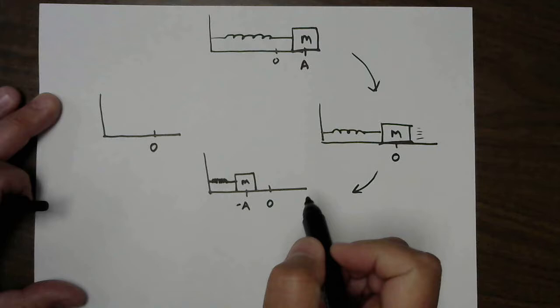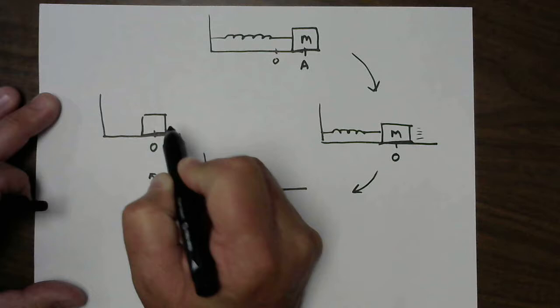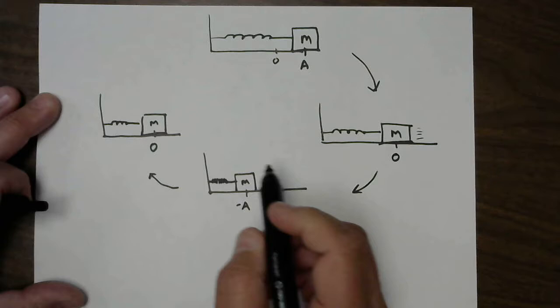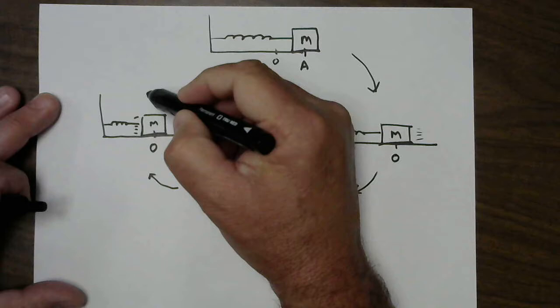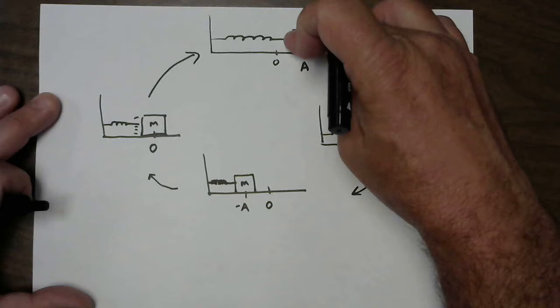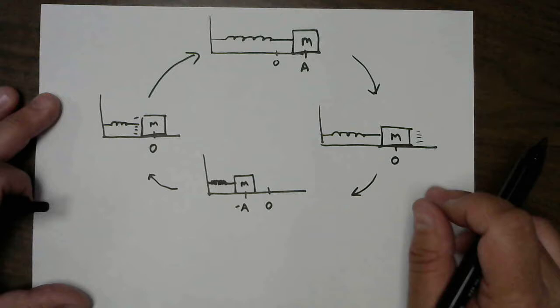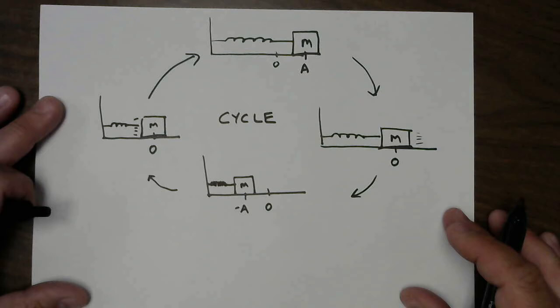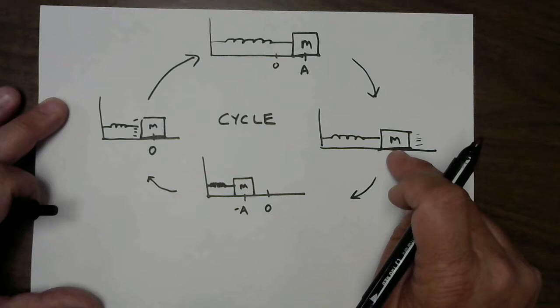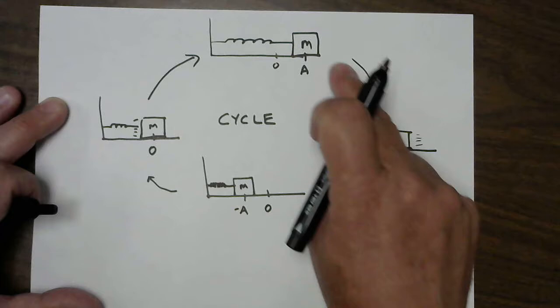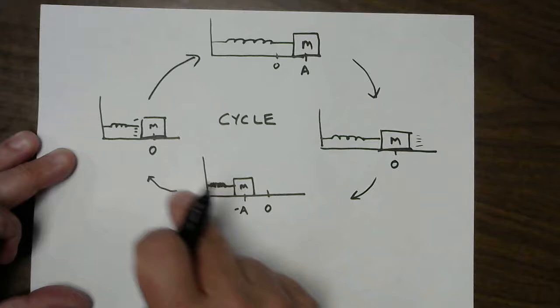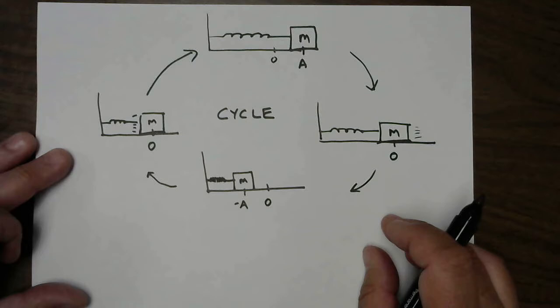A compressed spring will push the other way, so this thing will return to its equilibrium position with the spring in its relaxed normal length. But this mass will be moving and will overshoot, returning us to the initial drawing. So this is truly a cycle or cyclical process. You can start anywhere you want and you still get the same result.